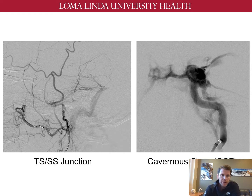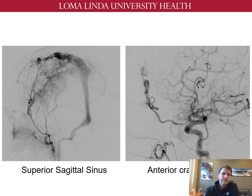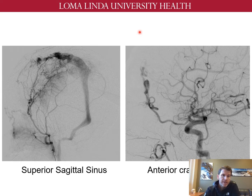The most common locations for dural AV fistulas of the brain include the transverse sigmoid sinus junction, followed by the cavernous sinus or CC fistulas. The superior sagittal sinus is another common location for AV fistula formation. A less common location, but still clinically important, is the anterior cranial fossa dural AV fistula, which is usually fed by ethmoidal branches of the ophthalmic artery.